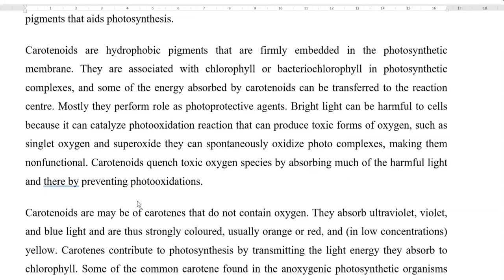Some of the energy absorbed by the carotenoids is transferred to the reaction centers present in the bacterial chlorophyll, and thus they can augment the photosynthesis process. They also perform a role as photoprotective agents. In general, bright light can have harmful effects on the cells — mainly, they photo-oxidize the reaction center containing the chlorophyll molecules, producing toxic forms of oxygen such as singlet oxygen and superoxide molecules, which can spontaneously oxidize the photocomplexes containing chlorophyll. As a result, the whole photosynthesis process may be halted. Carotenoids play a role in absorbing the harmful light and thereby preventing photo-oxidation.